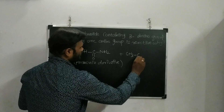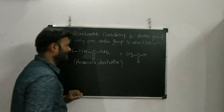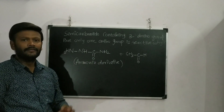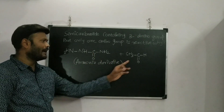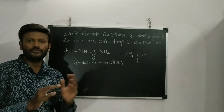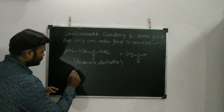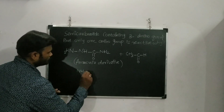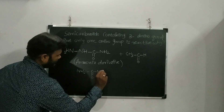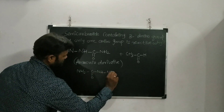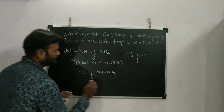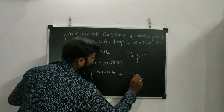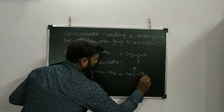Suppose we have one carbonyl compound — for example, CH₃–C(=O)–H, which is acetaldehyde. We also have an ammonia derivative present. The structure being written is: NH₂–NH–C(=O)–NH₂ (semicarbazide) reacting with CH₃–CHO (acetaldehyde).